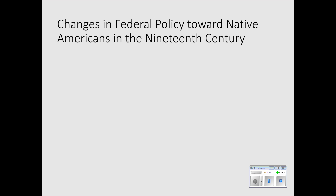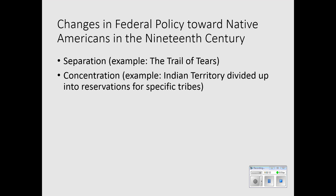We can identify stages of federal government policy toward Native Americans in the 19th century. Before the Civil War, the most common model was separation — moving Indians west of the Mississippi River. The most dramatic and tragic example was the Trail of Tears in the late 1830s, in which so many Native Americans died while being forcibly moved to the Indian Territory, which is the present-day state of Oklahoma. The next model was concentration, where the Indian Territory was divided up into reservations for specific tribes, and the goal was to move as many Native Americans to their reservation as possible.